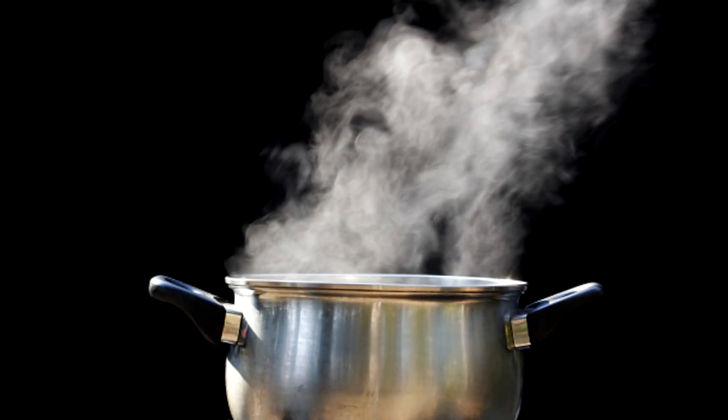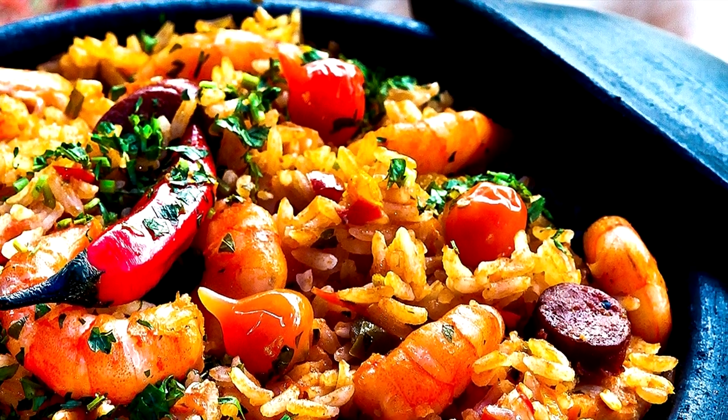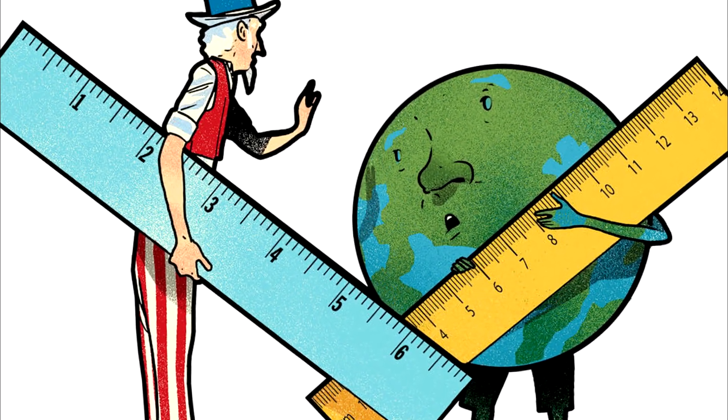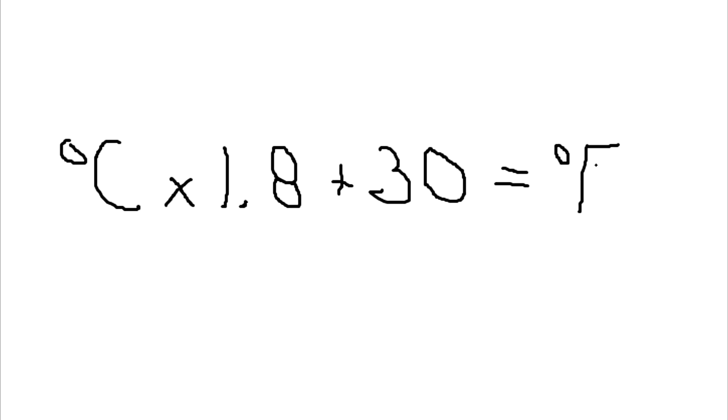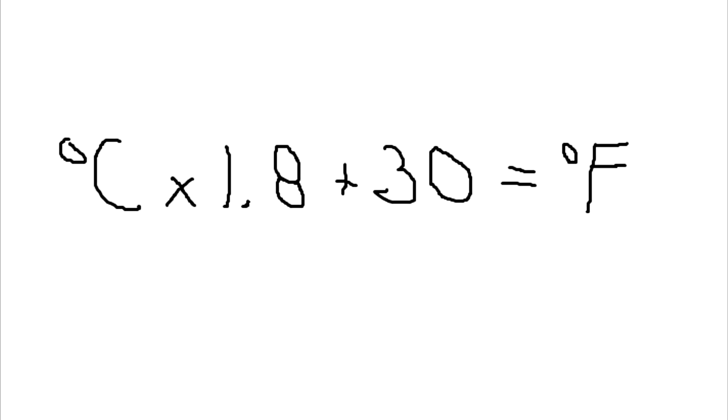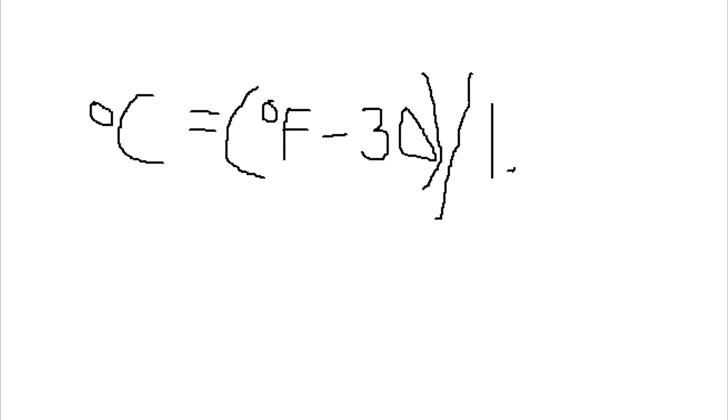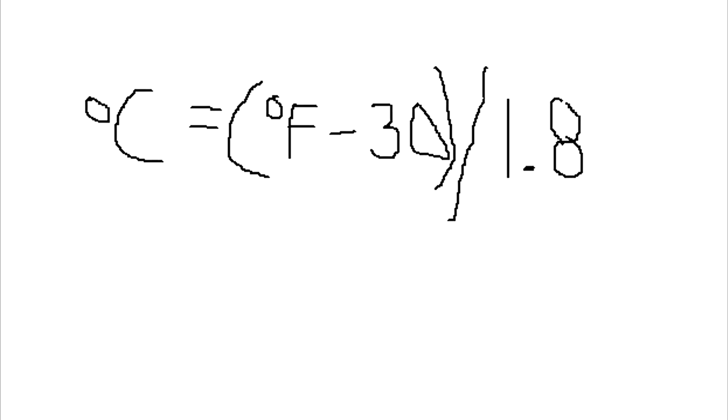Easily convert Celsius to Fahrenheit, or vice versa. Working on a chemistry project, working with a foreign recipe, or for anyone in the U.S. who may at some point find themselves having to use the metric system, to convert Celsius to Fahrenheit, multiply the temperature by 1.8 and then add 30. To convert degrees Fahrenheit to Celsius, subtract 30 from the number and then divide by 1.8.